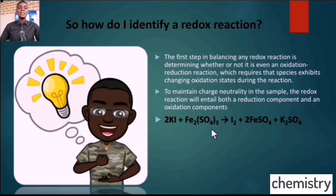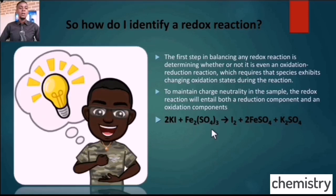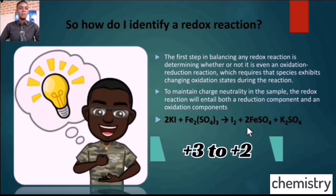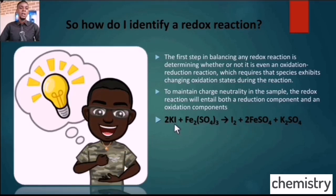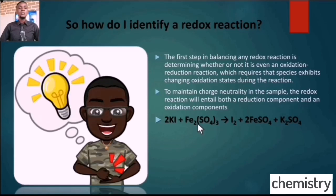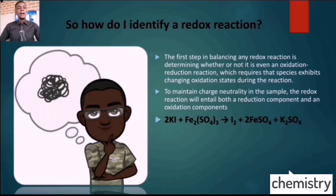Because if iodine is changing its oxidation state, it tells us there is another species also changing its oxidation state. Iron is changing from an oxidation state of plus 3 to an oxidation state of plus 2, while sulfate remains the same. So there are two species in this chemical reaction that are changing oxidation state: iodine and iron. For a redox reaction, we single out these species that are changing their oxidation state and leave out the rest, writing it ionically.